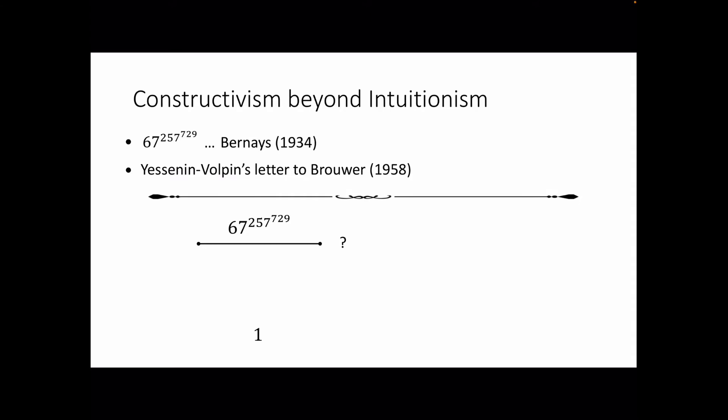Actually, the strict finitist doesn't draw a line. A story of Yessenin-Volpin is reported in Harvey Friedman's Seminar Notes 2002, where Friedman asked, Is 2 a number? And Yessenin-Volpin said, Yes, after a pause. This went on, and in the end, it was apparent that Yessenin-Volpin was going to say yes to each question, but with a proportionately long pause.